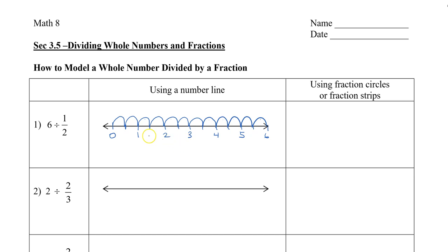So we can see that when I have 6, let's say this is 6 meters, and each time I take half-meter jumps, I have to take 12 jumps before we get to 6 meters.